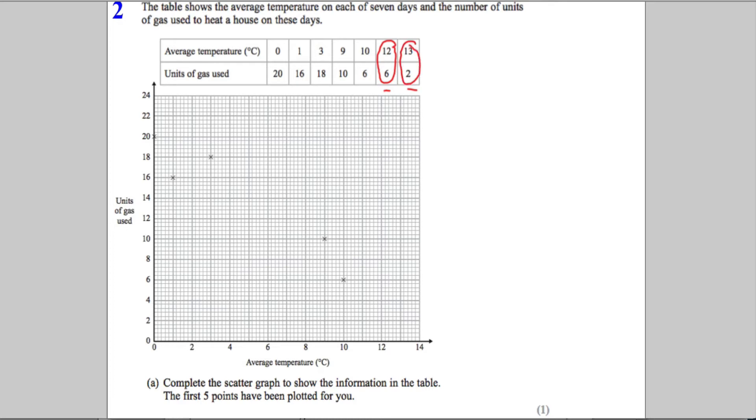So average temperature 12 with six units of gas - we'll go across to average temperature of 12 and then up to six and put the cross there, being as accurate as possible. And then average temperature of 13 goes with two units of gas, so average temperature 13 must be here and two is here. That should get us full marks there.